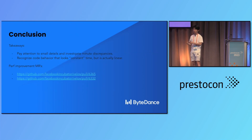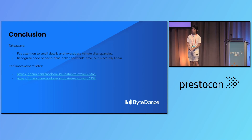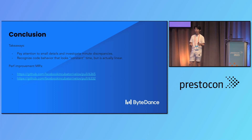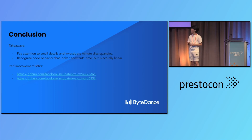The net outcome was two optimization PRs that have been merged, so anyone running the Presto native worker runtime is already benefiting from them. The takeaways from this journey are: pay attention to small details and investigate minute discrepancies; and recognize code behavior that looks constant time but is actually linear — like the lookup structure zeroing, which is linear to input size. Don't assume something is constant time. That's the end of the lightning talk, thank you.